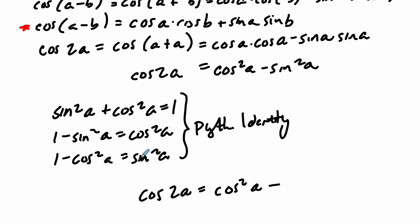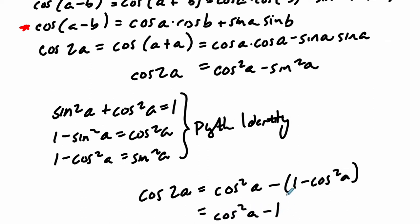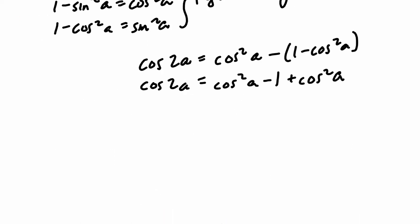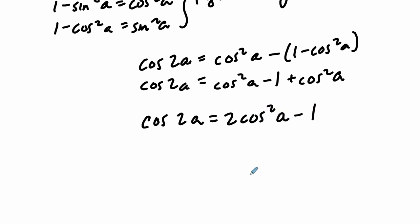Minus sine squared A becomes minus the quantity 1 minus cosine squared A, which equals cosine squared A minus 1 plus cosine squared A. So cosine of 2A equals 2 cosine squared A minus 1. This is another big double angle formula that's used a lot.